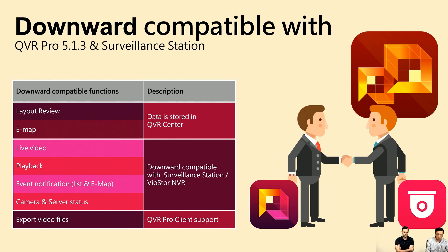The compatibility function list covers all relevant important functions such as layout review, e-map, live video playback, event notification, and camera and server health status. Users don't need to worry about compatibility issues and can retain the possibility for future upgrades.